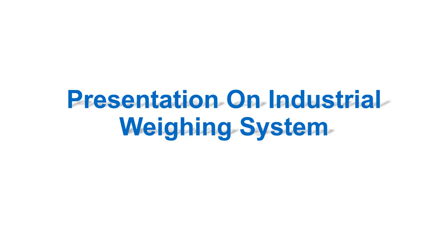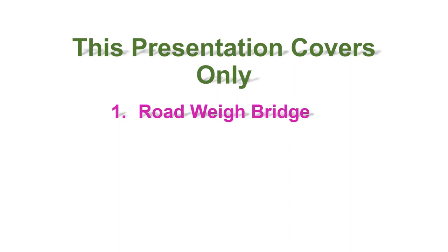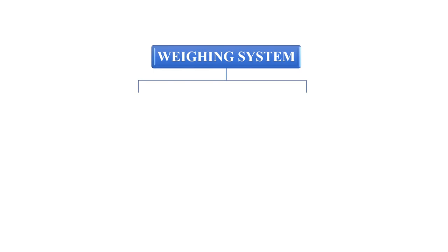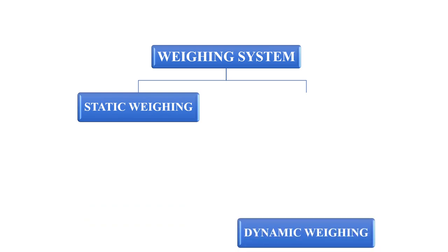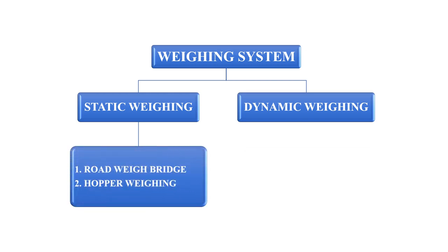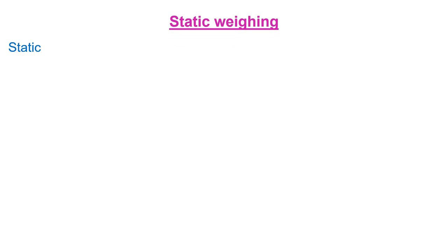Industrial weighing system is a very vast subject. In this presentation we will cover only road weighing bridge, hopper weighing, belt scale, and belt weighing feeder. Weighing system broadly can be divided into two groups: number one is static weighing, and number two is dynamic weighing. Road weighing bridge and hopper weighing come under static weighing system, and belt scale and belt weighing feeder come under dynamic weighing system.